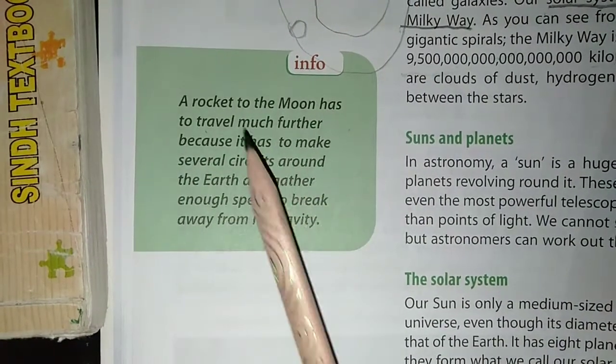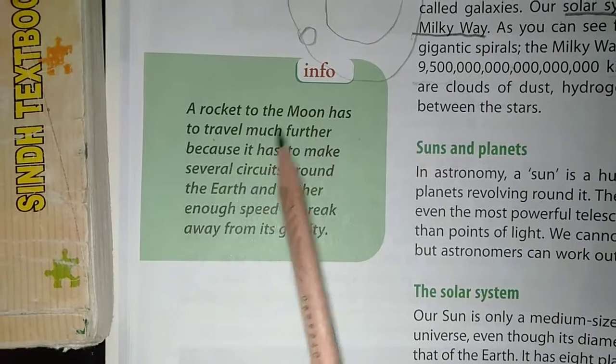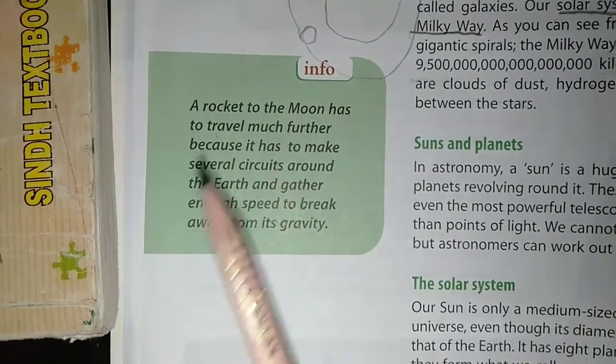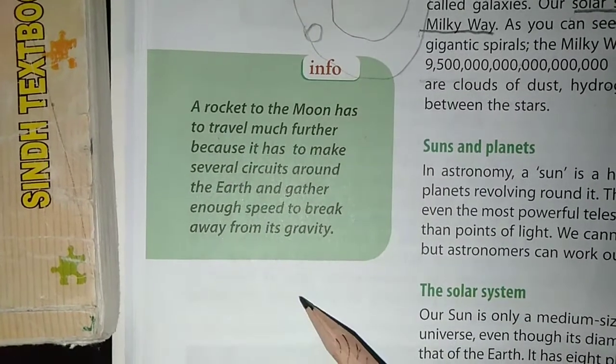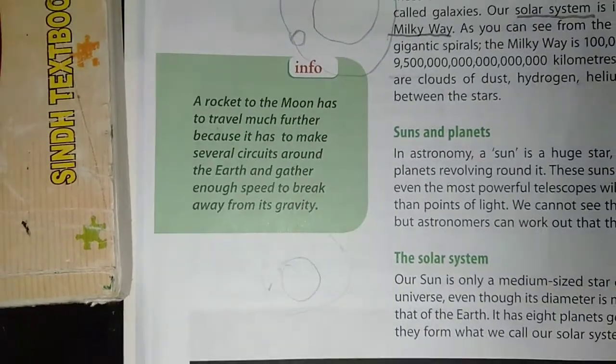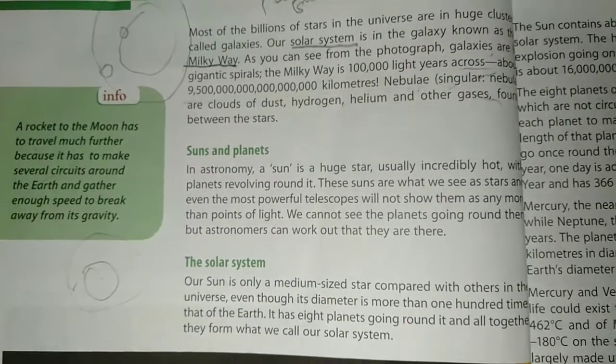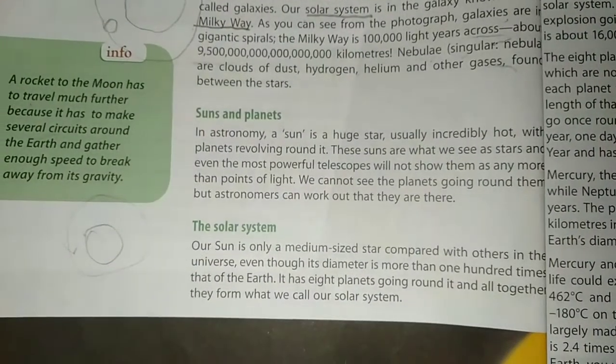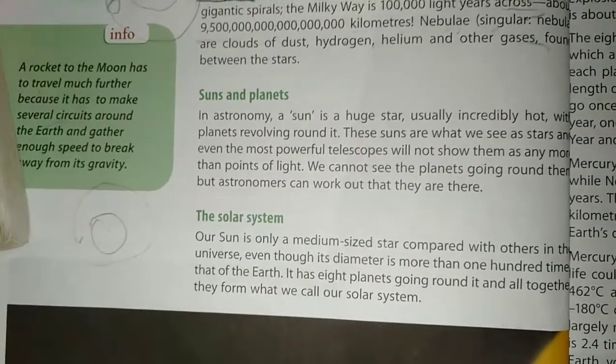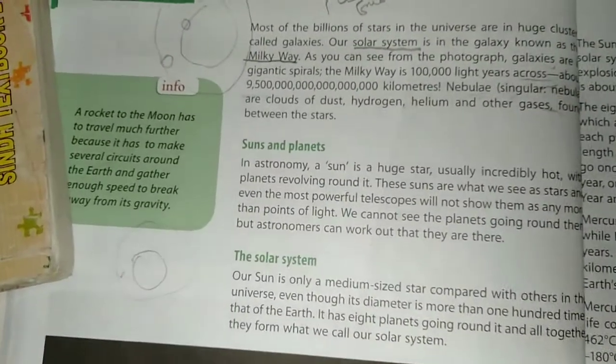A rocket to the moon has to travel much further because it has to make several circuits around the earth and gather enough speed to break away from its gravity. In space, without gravity, you can move directly in any direction.